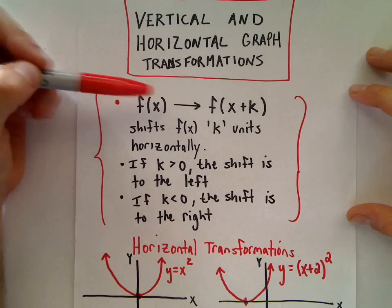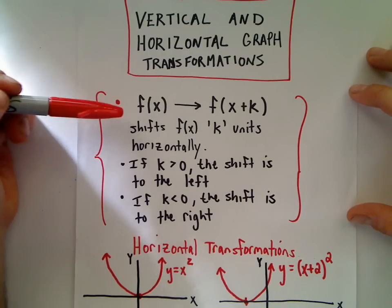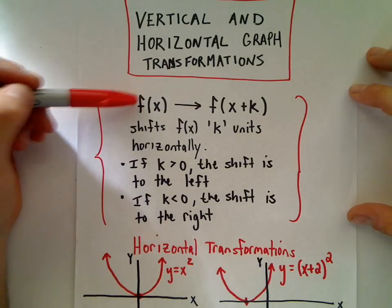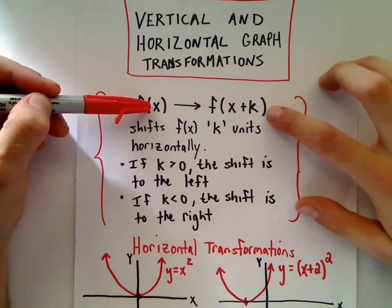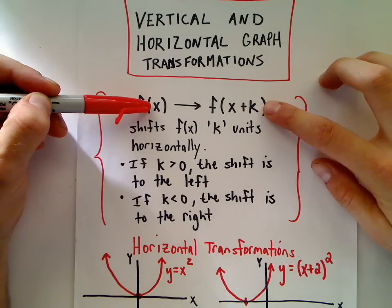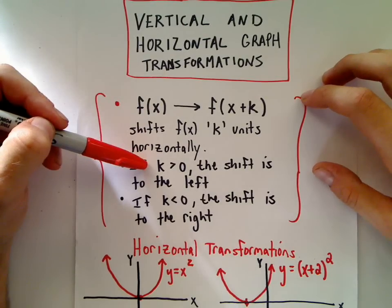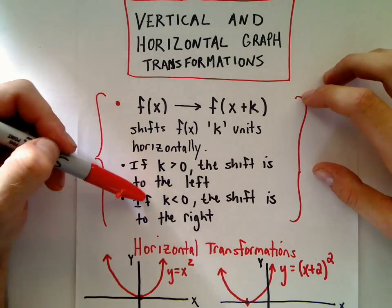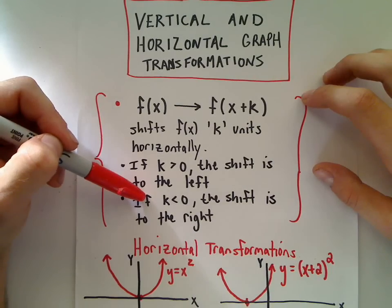First, we'll talk about horizontal transformations. The idea is, if everywhere there's an x in your formula, you replace it with x plus or minus a number, it's going to shift the graph horizontally. If k is positive, it shifts to the left. If k is negative, it shifts to the right.